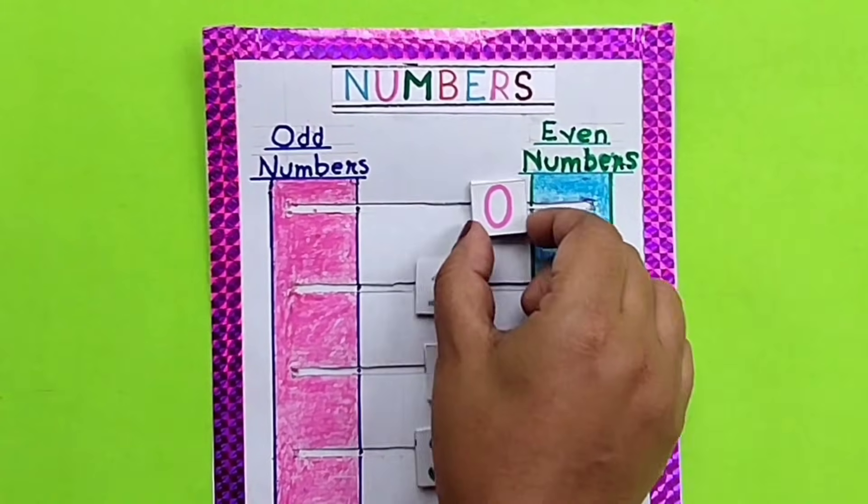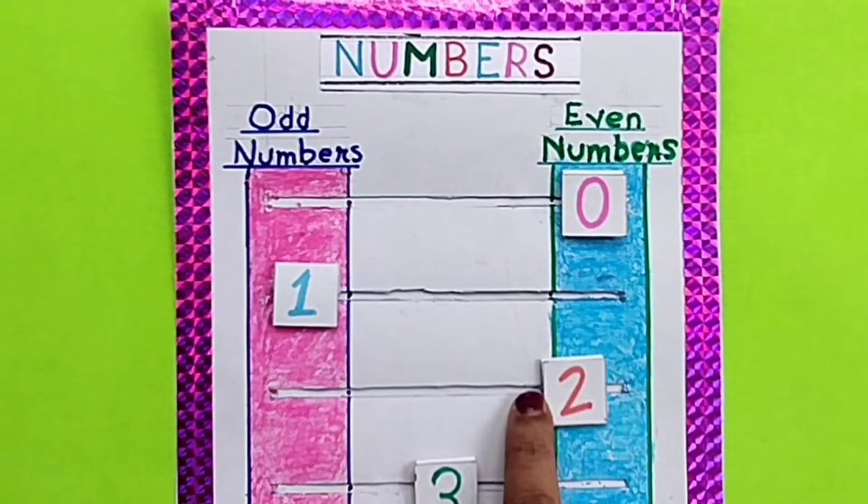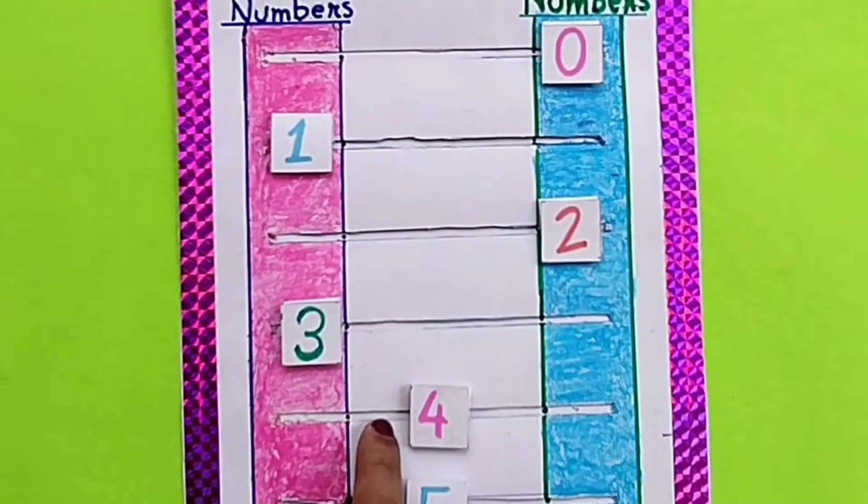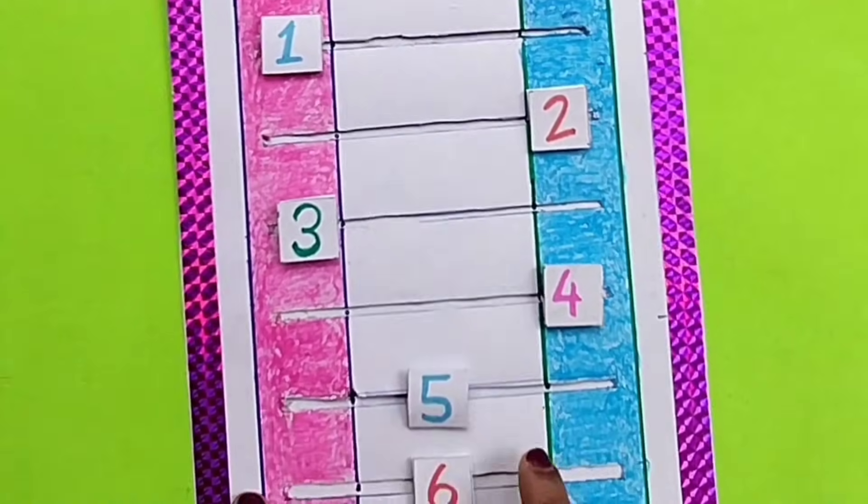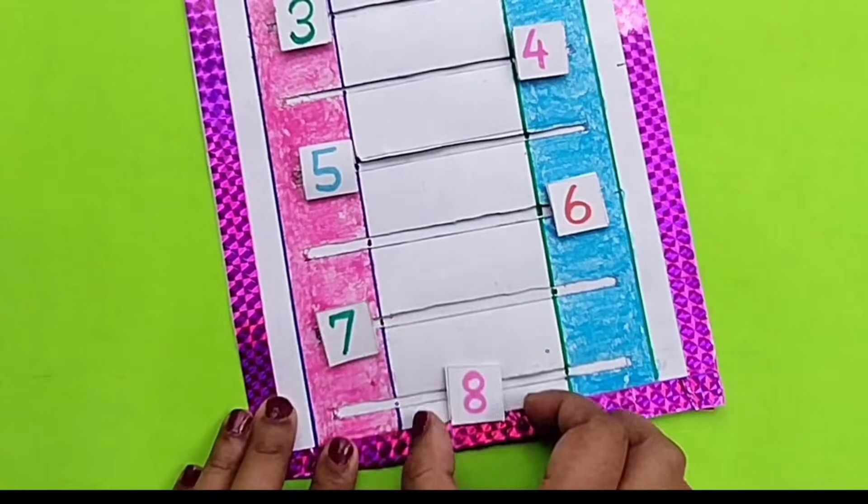Zero is even number, one is odd number, two is even number, three is odd number, four is even number, five is odd number, six is even number.